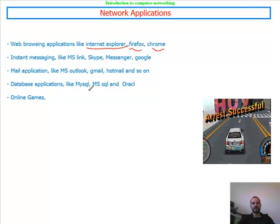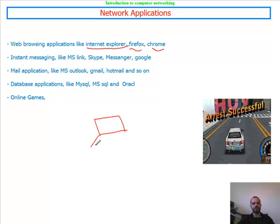We also have database applications like MySQL, Microsoft SQL Server, or Oracle SQL Server — databases that hold information about employees. Most companies use a database to store employee files and all their records and data, which they access via a web browser. And we have the most popular and expensive online games, which are becoming the most popular type of application that uses a network.